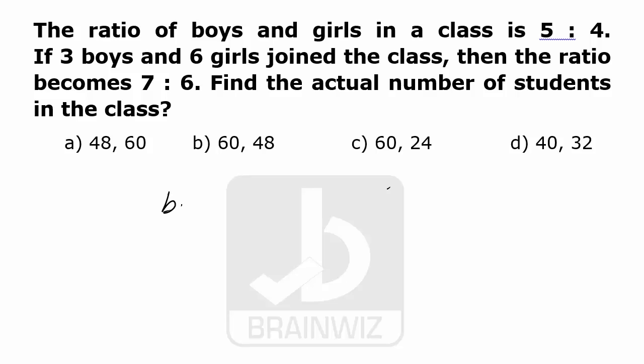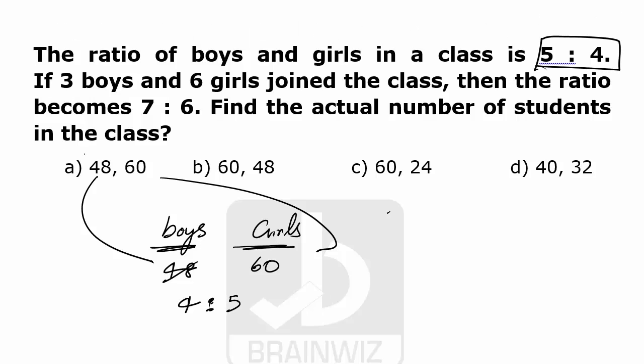We can simply solve this question by options. Here we have taken boys and here we have taken girls. Let the number of boys is 48 and let the number of girls is 60. This is something around 4 is to 5, but as he said that initially they are 5 is to 4, so option one is not satisfying.